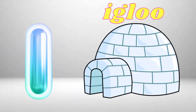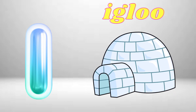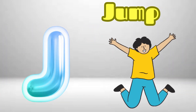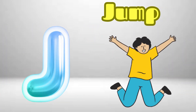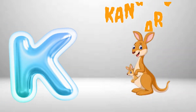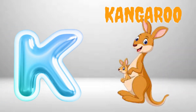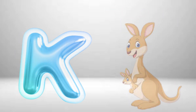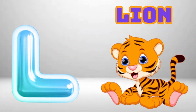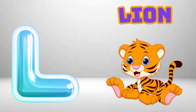I is for Igloo, I-I-Igloo. J is for Jump, J-J-Jump. K is for Kangaroo, K-K-Kangaroo. L is for Lion, L-L-Lion.